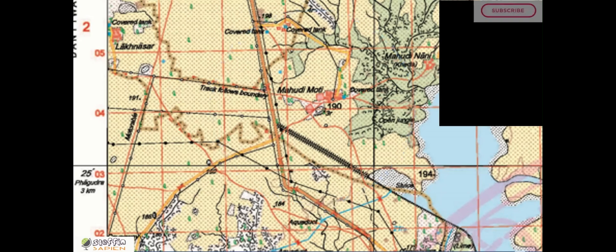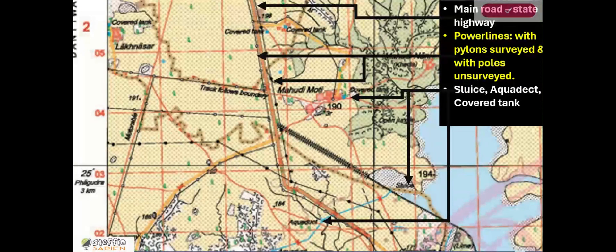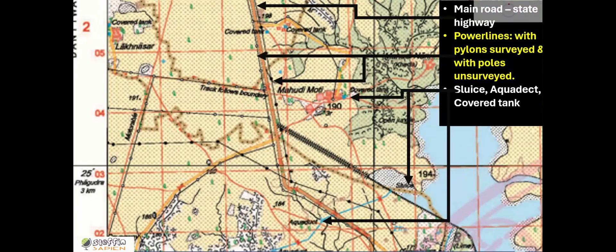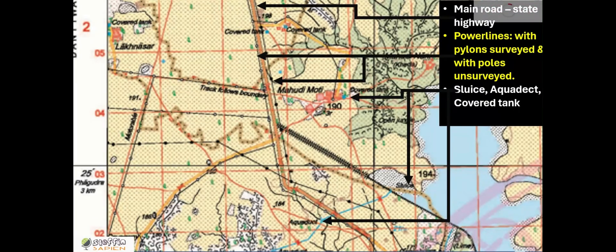Now let's see what are the developments happened here in the last 10 years. The probable answers are the development of the main road. Secondly, on either side of the road we can see power lines, both pilot surveyed and unsurveyed. Then other possible facilities include sluices near the dam to lift water, there's a gate that allows water to flow through a channel, an aqueduct, and two or three covered tanks. These are all the possible developments that might have happened in the last 10 years.